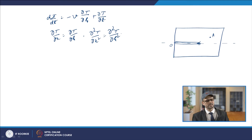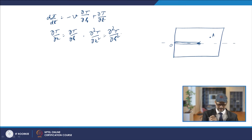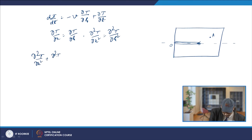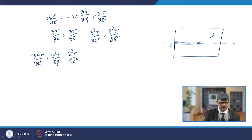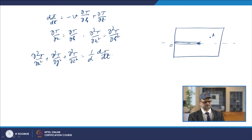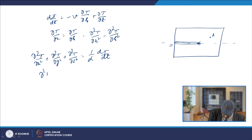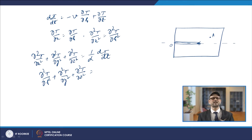We had the Fourier equation: ∂²T/∂x² + ∂²T/∂y² + ∂²T/∂z² = (1/α) dT/dt. Substituting the expressions, ∂²T/∂x² becomes ∂²T/∂ζ², the y and z terms remain the same, and the dT/dt term becomes −v ∂T/∂ζ + ∂T/∂t, where α is the thermal diffusivity k/(ρ·cp).